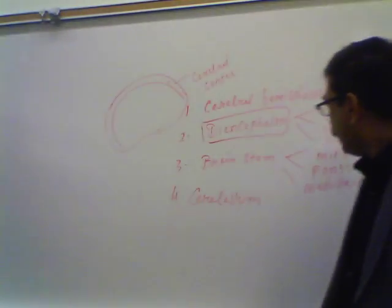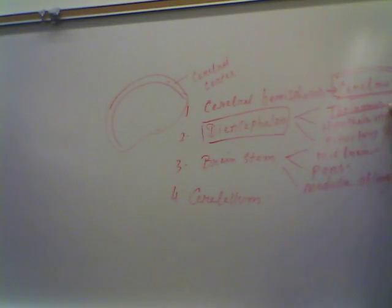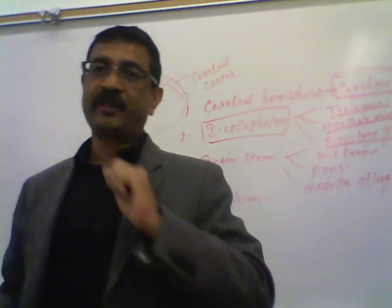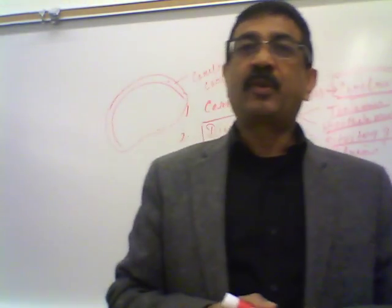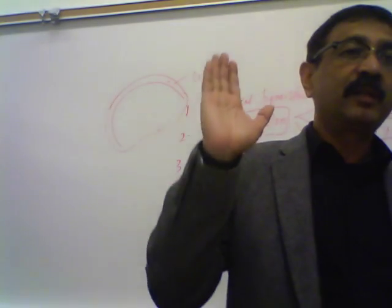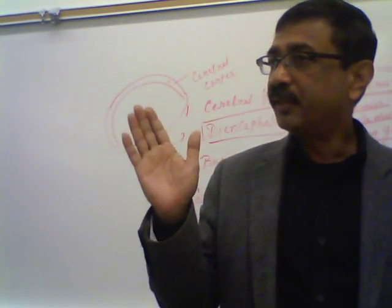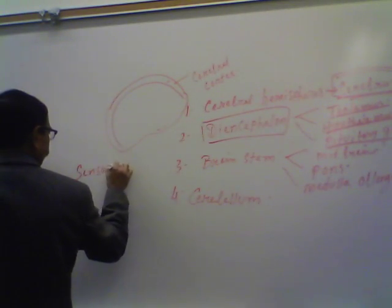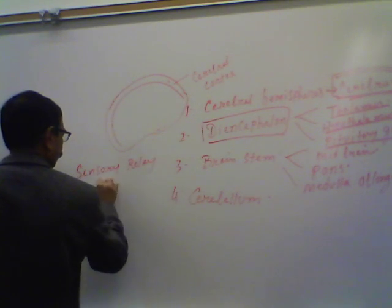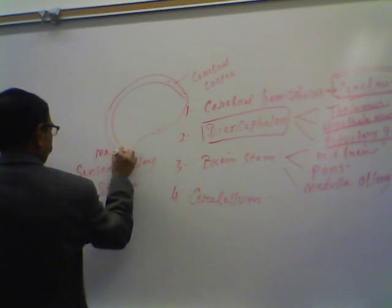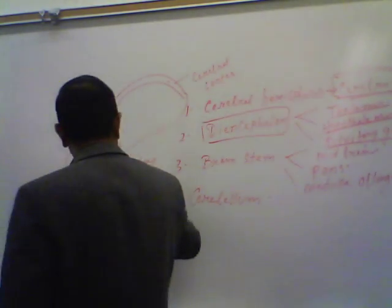Diencephalon has three structures: thalamus, hypothalamus, and the pituitary gland. The function of the thalamus: the thalamus is called the major sensory relay station. That is a very important function. Almost all sensory signals that travel toward the brain are relayed in the thalamus — like a relay race where one person hands the stick to the next person.